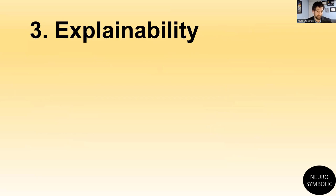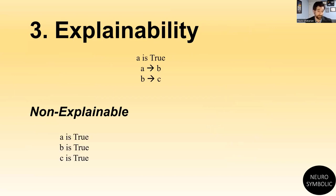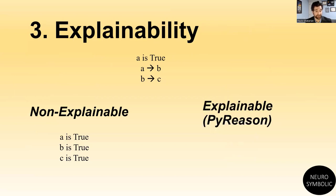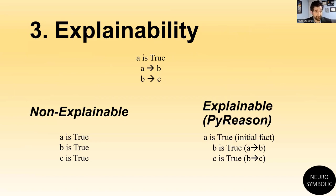The next desirable aspect is explainability. Given the same example, something that's not explainable will just say: A, B, and C are all true. Whereas PyReason, which is explainable, will actually say A is true because it's an initial fact, B is true because A implies B, and C is true because B implies C. We designed this for scale — what happens when you reason about thousands or even millions of these things? PyReason is designed to do that inference correctly and also provide you that trace, which will be very valuable in building systems amenable to human understanding, debugging, and robustness to adversarial attacks.